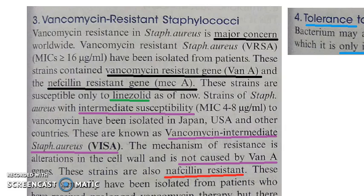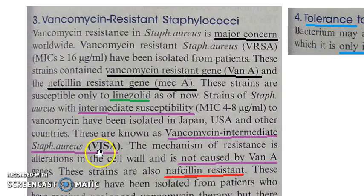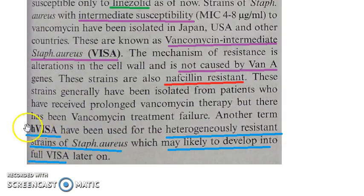If the bacteria are methicillin-resistant, you give vancomycin. However, bacteria have even become resistant to vancomycin — a major concern — due to the vanA gene. There is also intermediate susceptibility to vancomycin; these strains are called VISA (vancomycin-intermediate Staphylococcus aureus), and there are also hVISA (heterogeneously resistant) strains that can become full VISA later.